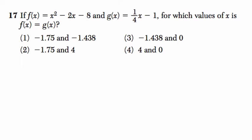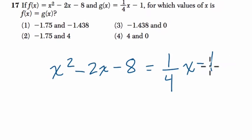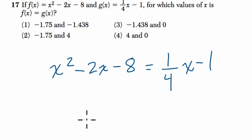Alright, so here they want to know if f(x) equals x squared minus 2x minus 8, so that's our first equation, right? And g(x) equals one-fourth of x minus 1, for which values are these two things equal?